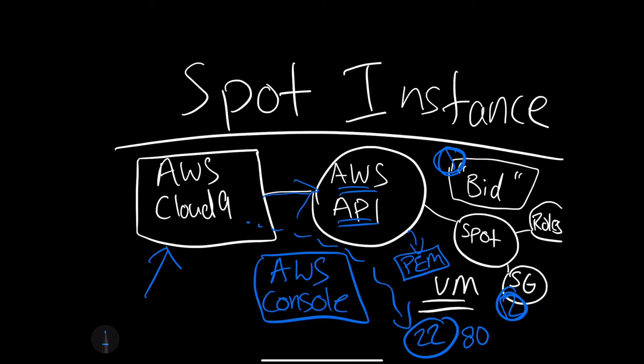Finally, if I wanted to do a separate API call — let's say I wanted to do natural language processing or some kind of image recognition service call — I would have to assign a role to the Spot instance so that it had the ability to make those connections.